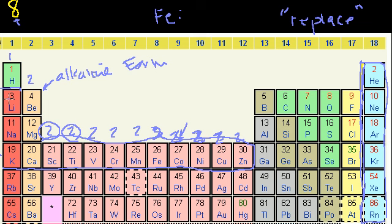Metals are just very giving with their electrons. The alkali metals say take my electron, the alkaline earth metals say take these two electrons, and the transition metals say I've got these two electrons — and not only that, but I have more electrons in reserve in my D subshell. As you fill the D subshell, these transition metals have so many electrons to hand off.